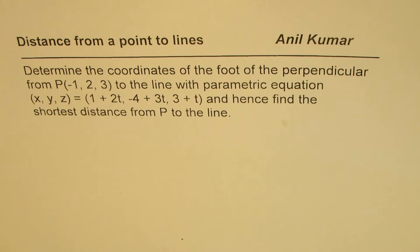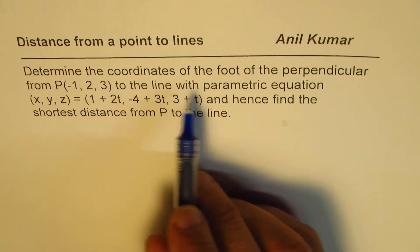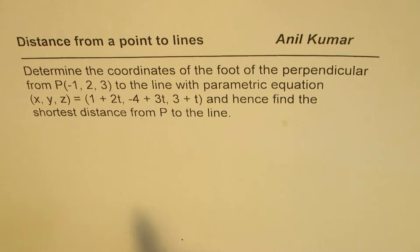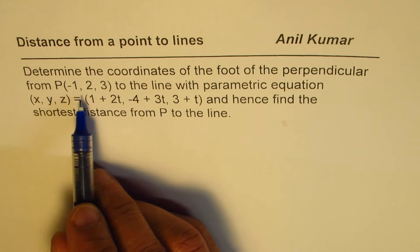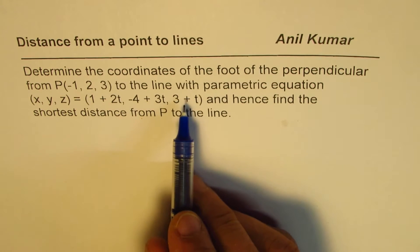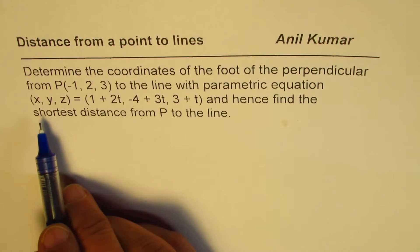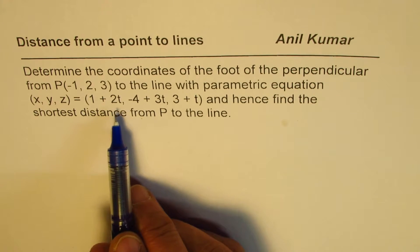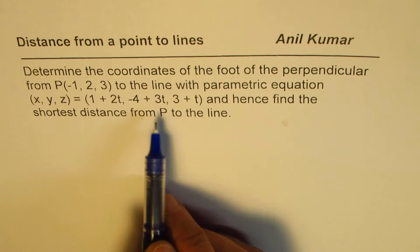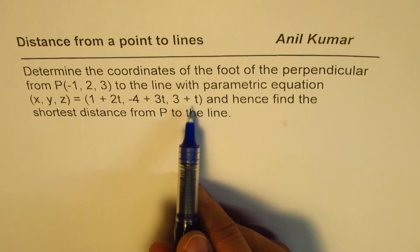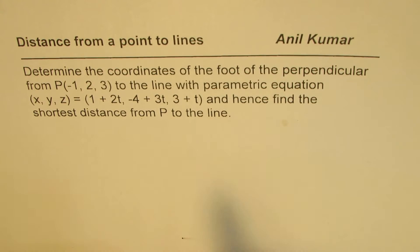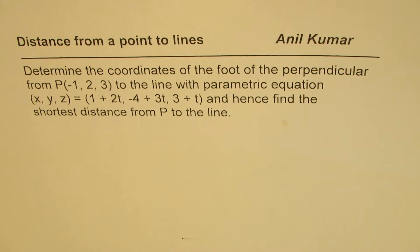I'm Anil Kumar and in this video we'll try to understand how to find distance from a point to a line. The question here is, determine the coordinates of the foot of the perpendicular from point P(-1, 2, 3) to the line with parametric equation (x, y, z) = (1 + 2t, -4 + 3t, 3 + t). And hence, find the shortest distance from P to the line.